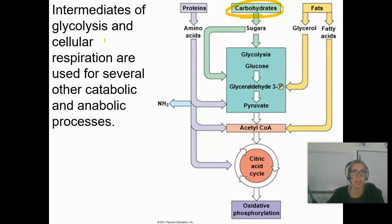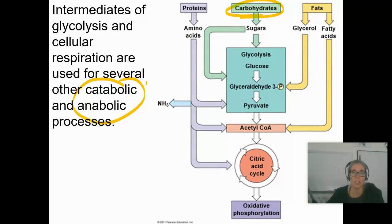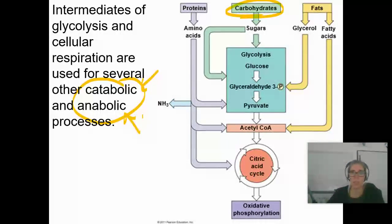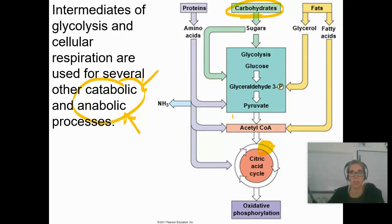Intermediates of glycolysis and cellular respiration are used for several other catabolic and anabolic processes. You can break them down to make other things you might need, or build them up — anabolic — to make other stuff you might need. So that might mean citrate, the first molecule in the Krebs cycle, could be used to build up some other molecule in your body that you might need.